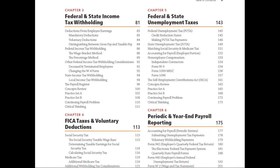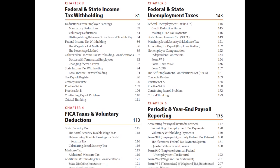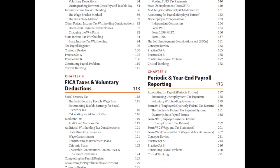Chapter three covers federal and state income tax withholdings — how they are calculated and the different methods that can be used. Chapter four covers FICA taxes — Social Security and Medicare — as well as voluntary deductions. As you can see, we're following the payroll cycle beginning to end. Chapter five covers federal and state unemployment taxes, plus some elements that don't fit neatly into the payroll cycle — such as non-employee compensation and the Self-Employment Contributions Act. Chapter six covers periodic, quarterly, and year-end payroll reporting, and is also very form-heavy since many forms must be completed at the end of the payroll cycle.